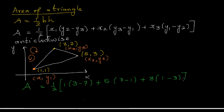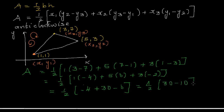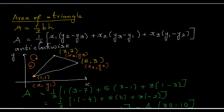Let's simplify. This is half times: 1 times negative 4, plus 5 times 6, plus 3 times negative 2. That gives half times (negative 4 plus 30 minus 6), which is half times 20, which equals 10.